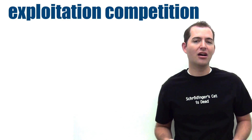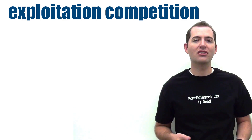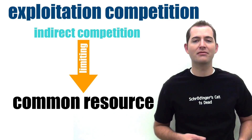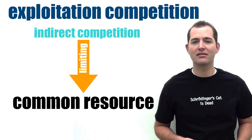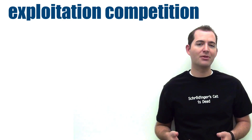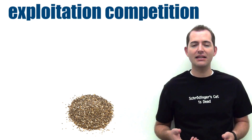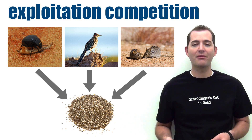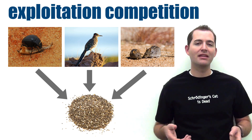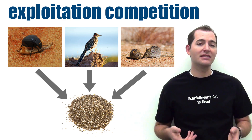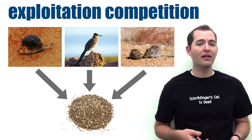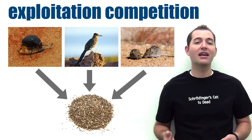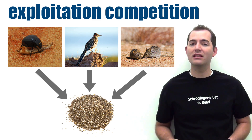Exploitation competition occurs indirectly by the limiting of a common resource. For example, desert seeds are used by insects, birds, and mammals, but the use of seeds by one limits the resource available to all of the others.